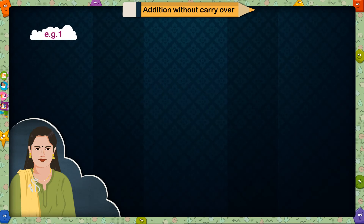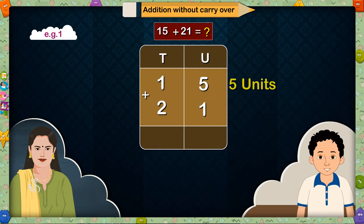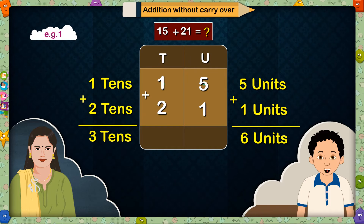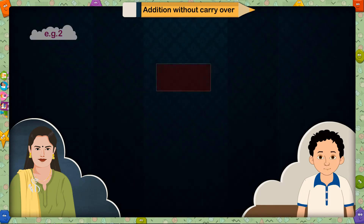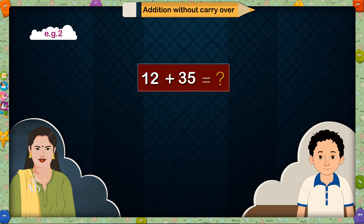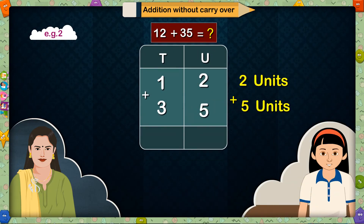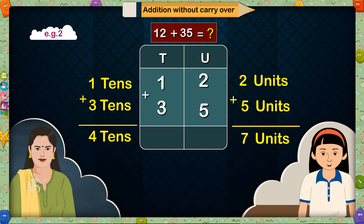Example 1: 15 plus 21 is equal to? 5 plus 1 is equal to 6 units, and 1 plus 2 is equal to 3 tens. So 15 plus 21 is equal to 36. Good. 12 plus 35 is equal to? 2 plus 5 is equal to 7 units, and 1 plus 3 is equal to 4 tens. So 12 plus 35 is equal to 47.